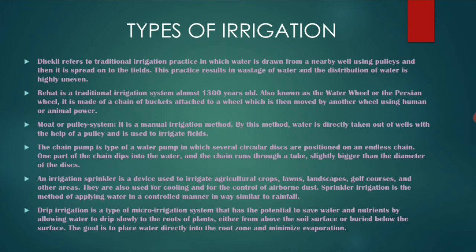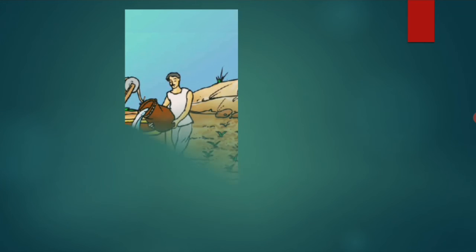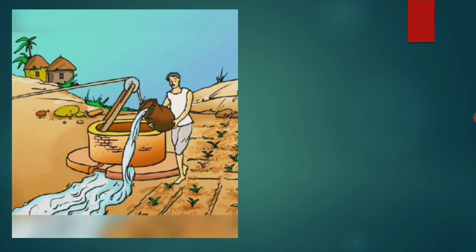Drip irrigation is also called micro drip irrigation because it uses very less water. It is also called a less-water-wastage irrigation method. Drop by drop, the water reaches the root of the plant, removing water wastage. Here are some pictures of irrigation.